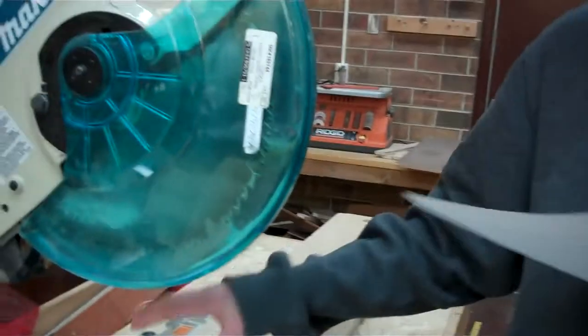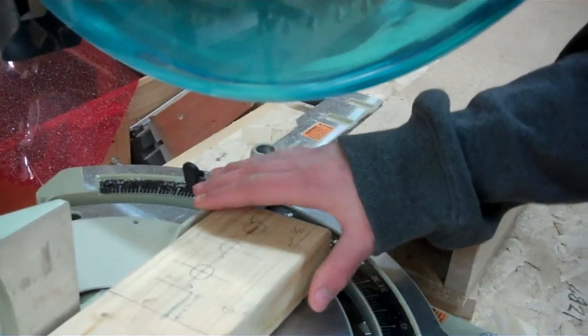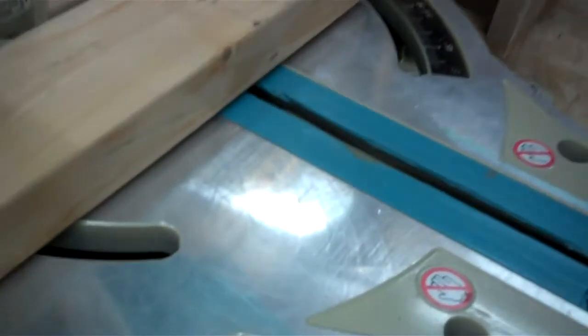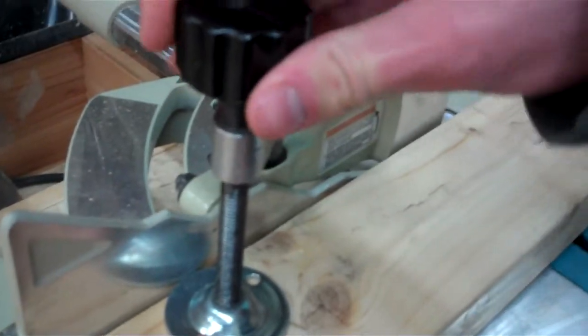This is the miter saw. Cut wood into shape. Hold work firmly against the fence and the table. Allow the motor to reach full speed before you make the cut. Keep your fingers outside the blade and use a clamp to hold your wood down.